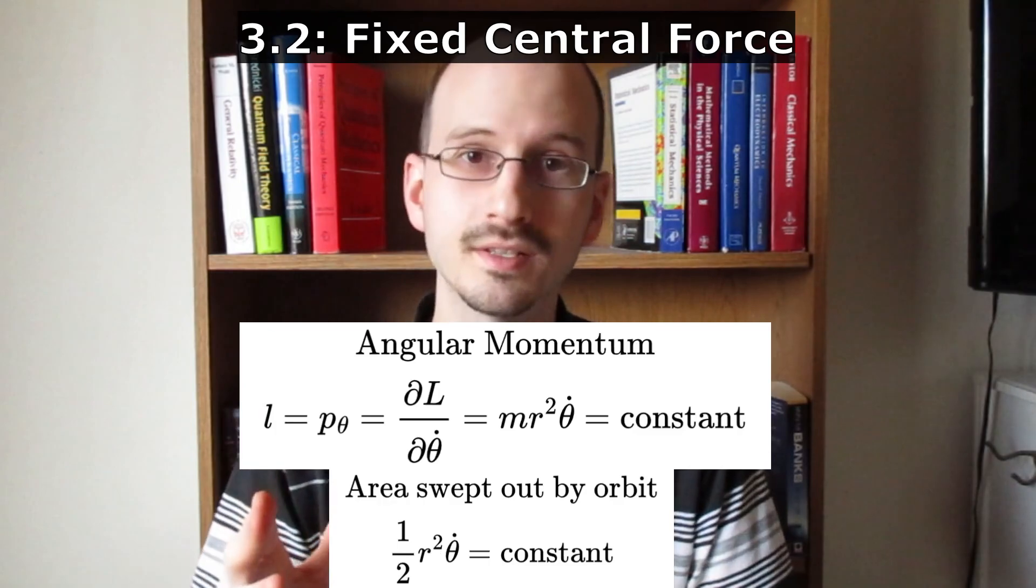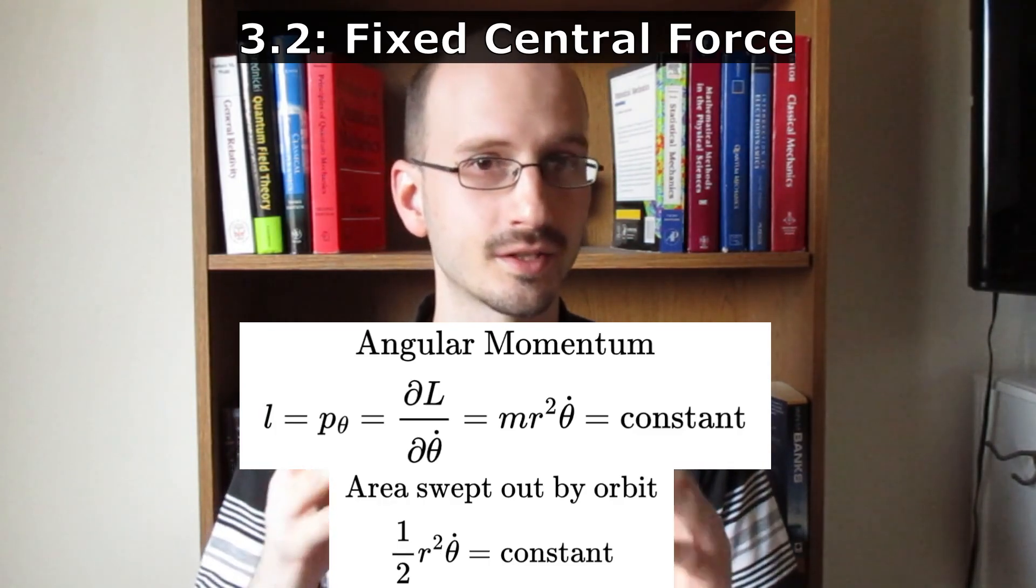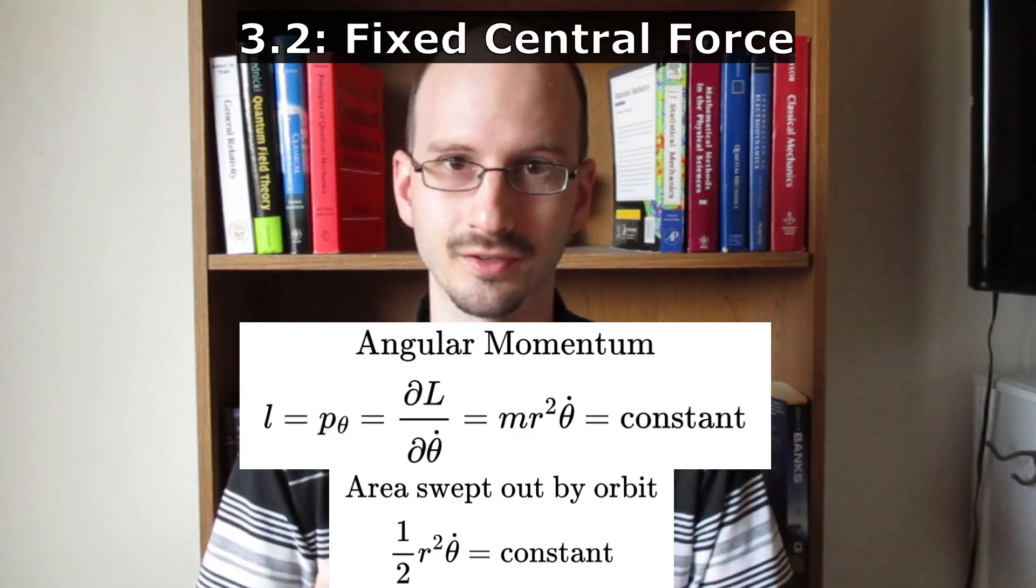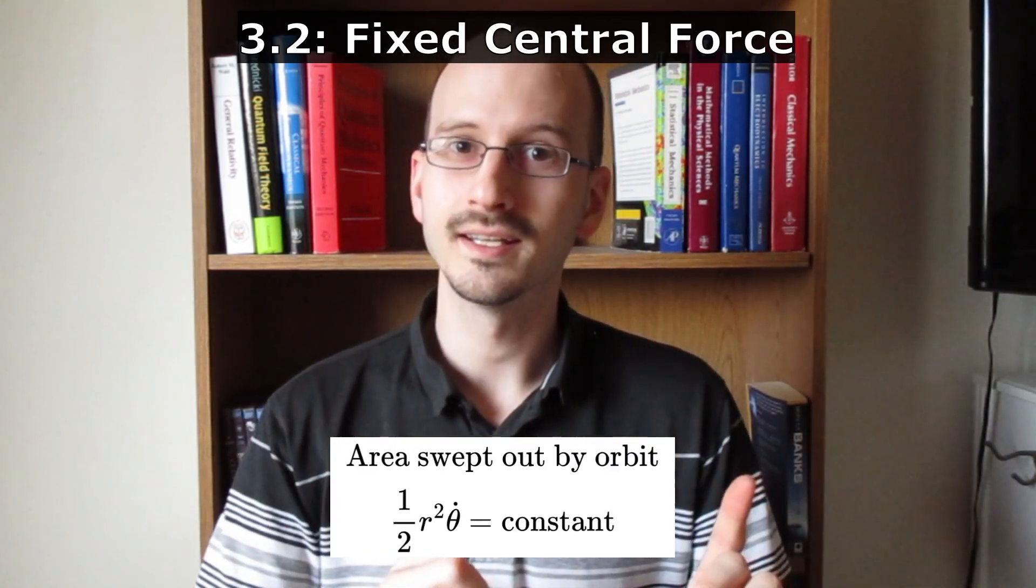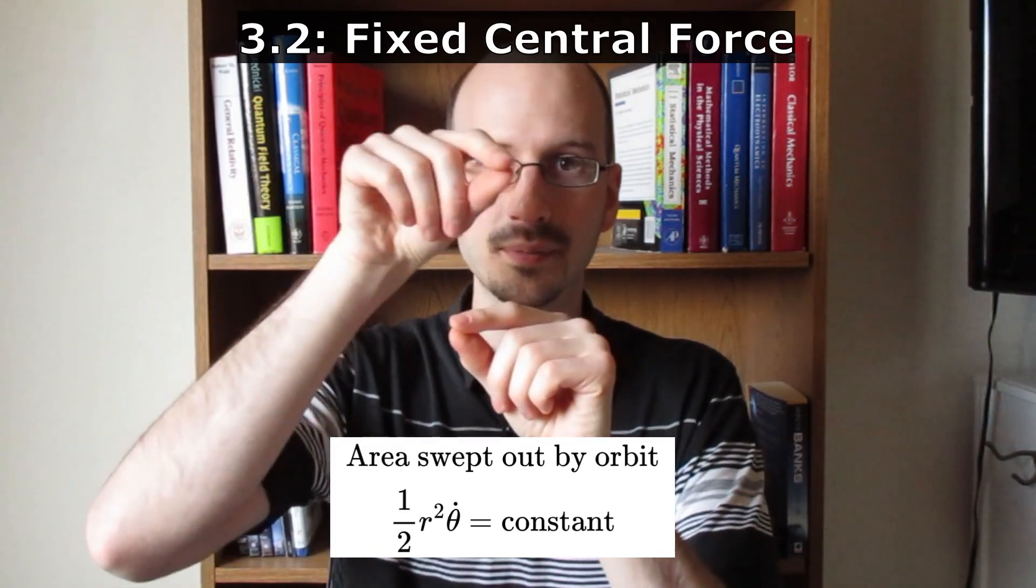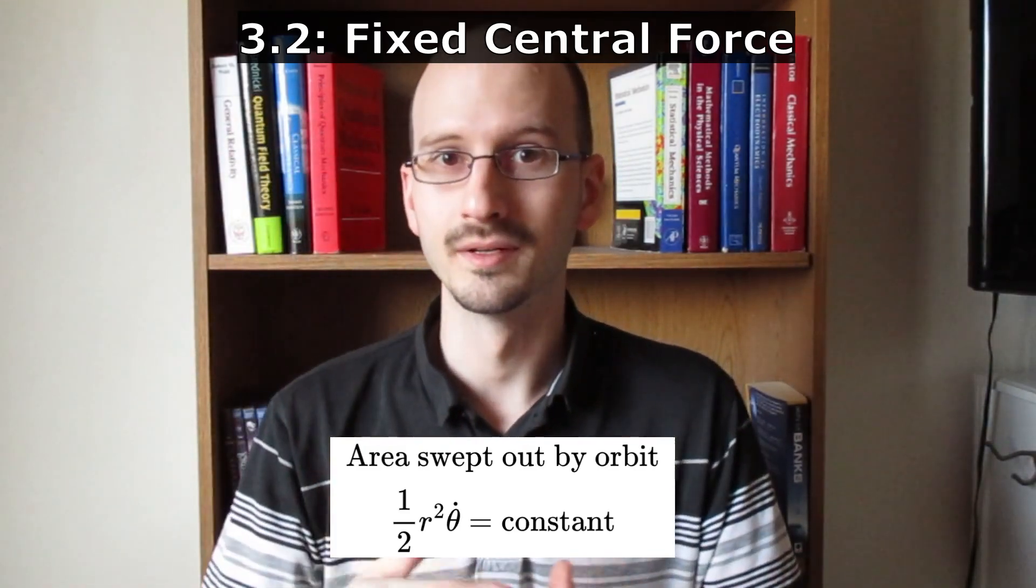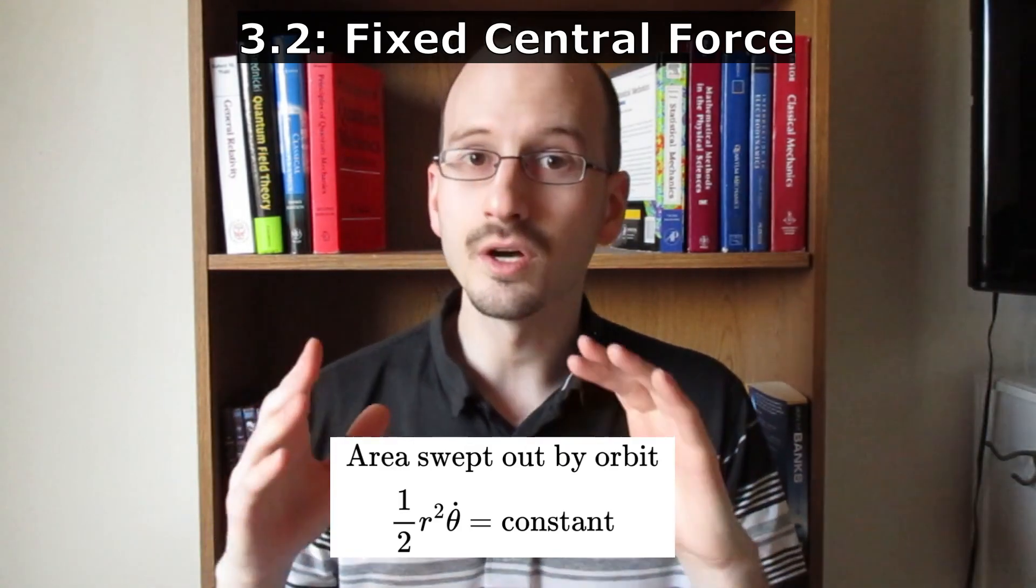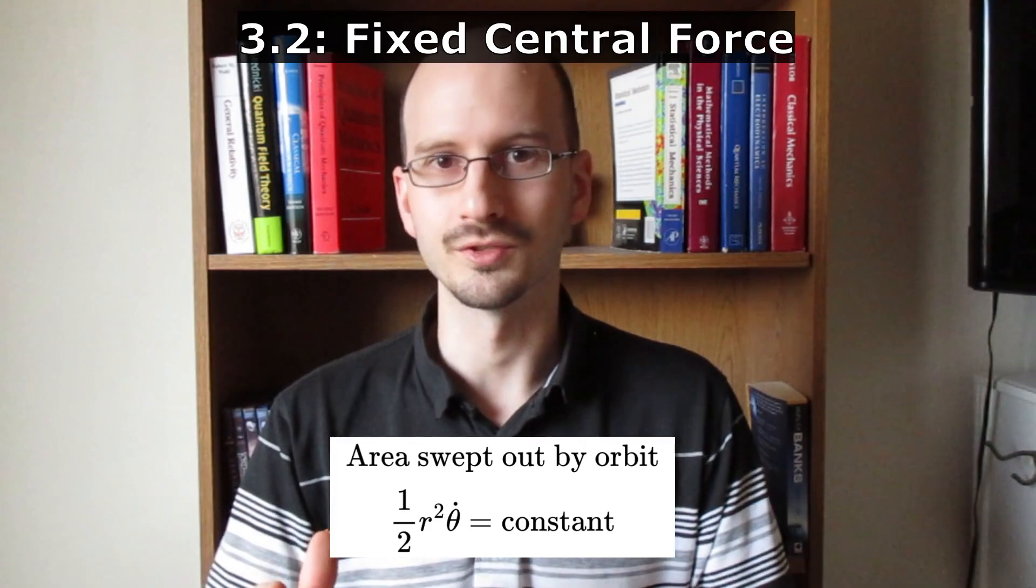And because a constant times r squared theta dot is conserved, a different constant times r squared theta dot is also conserved. What is that? It is the area swept out by the orbit over time. In the case of gravity, that's Kepler's second law, but it's also applicable to all central force potentials.